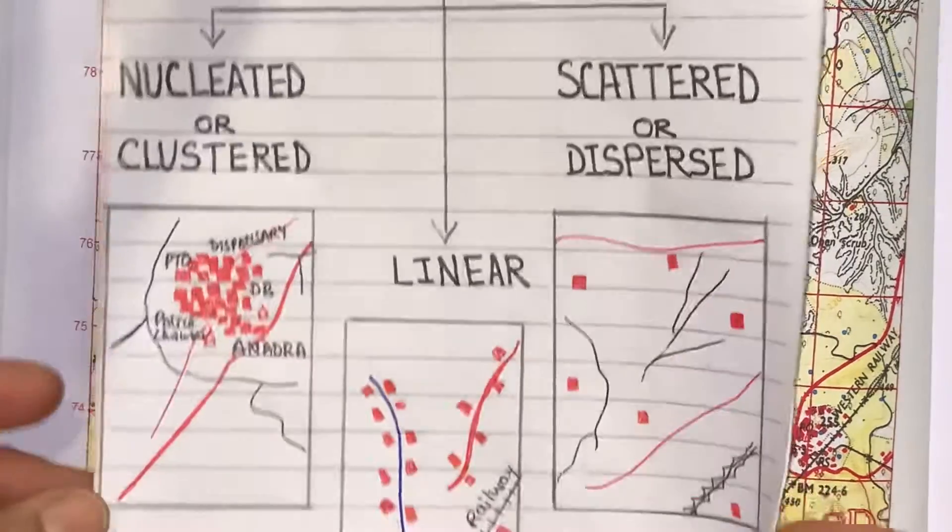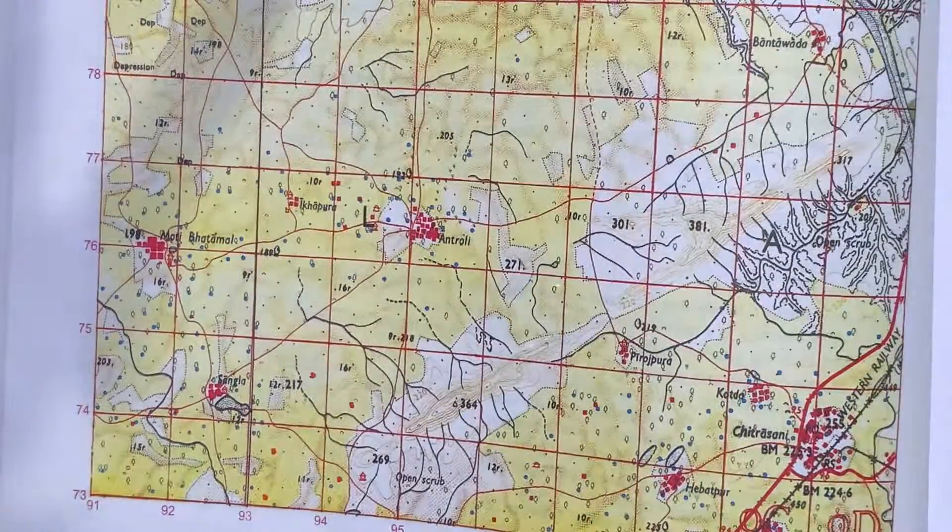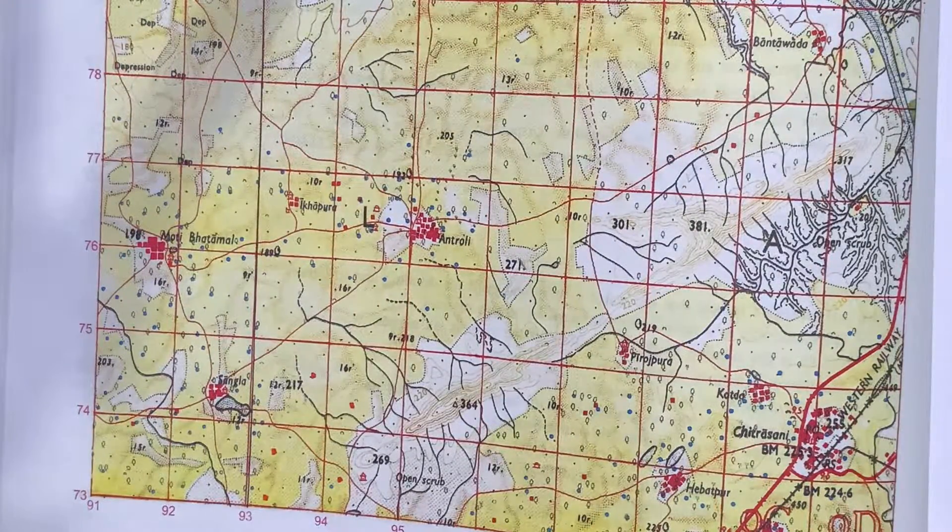Now, how to identify all these three types in your topographical map? You can see here.